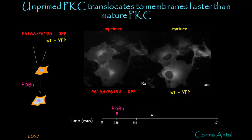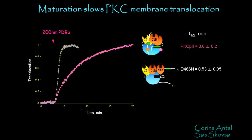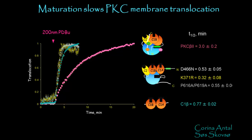Continuing the movie, we find that the wild-type enzyme will eventually go to the membrane. We can quantify these data: the wild-type enzyme translocates to the membrane in response to phorbol esters with a half-time of approximately three minutes. If we now look at the catalytically incompetent enzymes that cannot be processed, all three constructs translocate to membranes about ten times more quickly than the processed phosphorylated wild-type enzyme. If we look at the rate of translocation of just the isolated C1A, C1B domain, we find that it also translocates very rapidly to the membrane, which suggests a conformational difference between primed and unprimed enzyme.